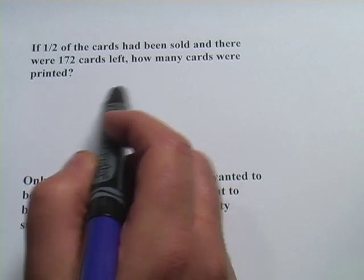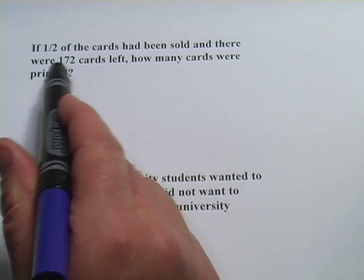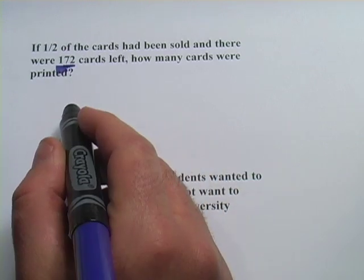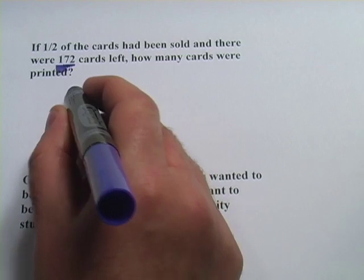So really, the number that were originally there is just double that. If that's half the original, then we double that, and what do we get, 344.